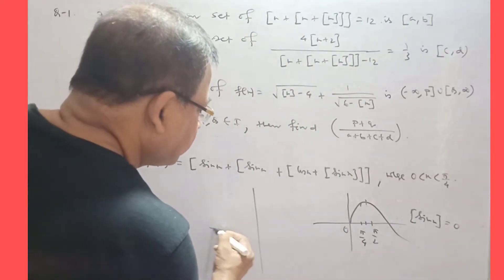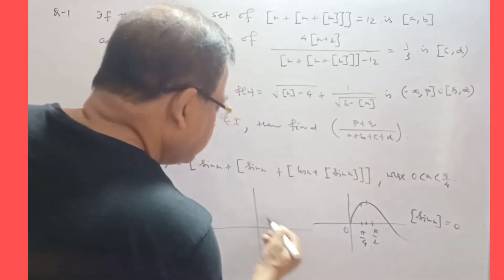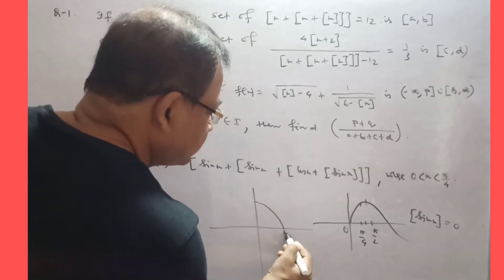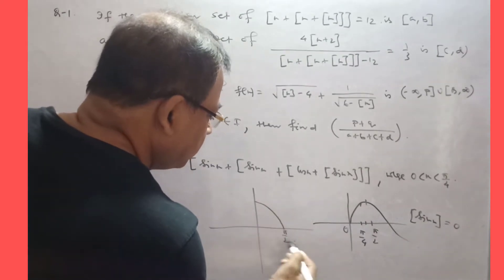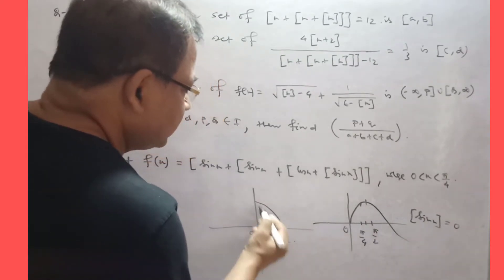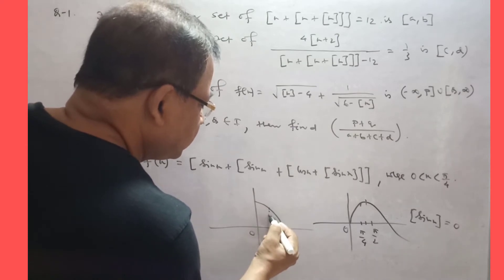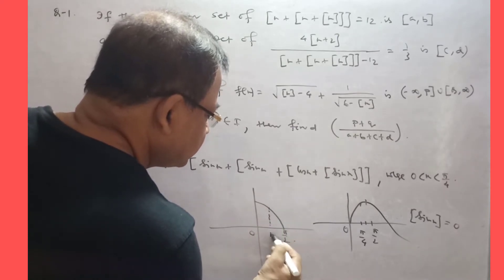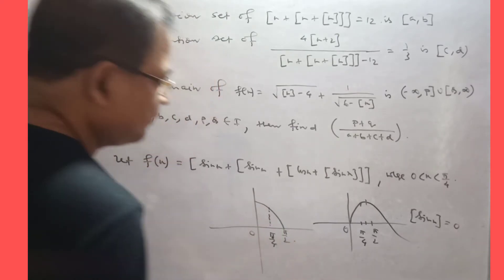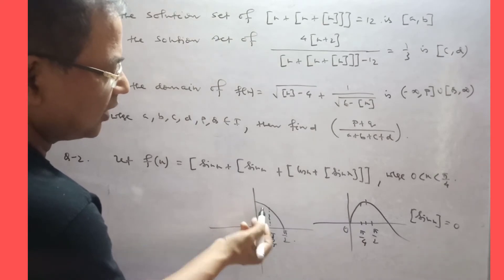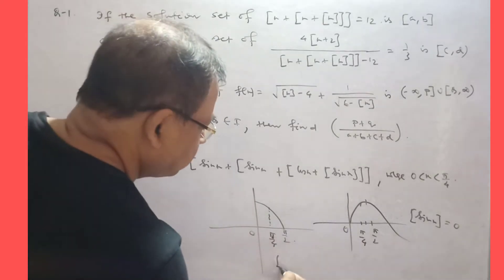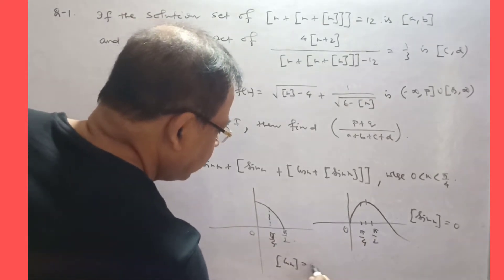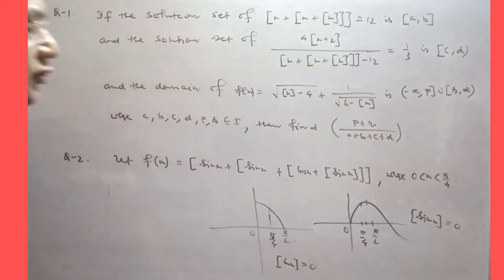Now looking at the cos X graph — in the interval [0, π/4], the value of cos X is also less than 1. So the greatest integer of cos X is also 0.